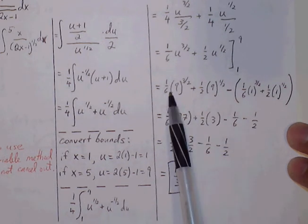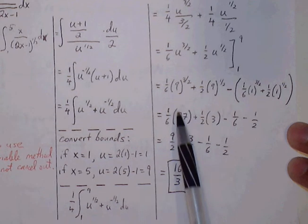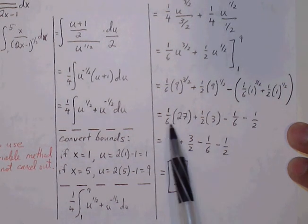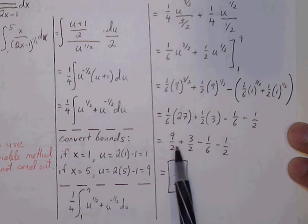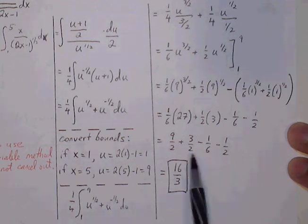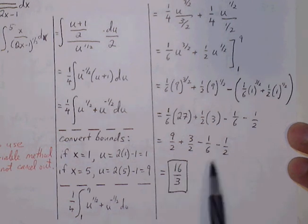And I'm going to go ahead and distribute the negative through and begin to clean up each of these fractions. So 9 to the 3 halves becomes 27. 9 to the 1 half becomes 3. Simplify. So now we have fractions that we can combine, which reduces to be 16 thirds.